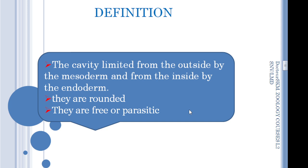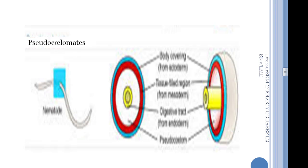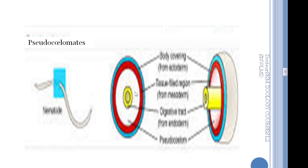These animals can be found in free life or parasitic life. If we cut a pseudocelomate animal, we discover the external layer which is the ectoderm — the body covering — and we find the internal covering of the digestive tract, which is endoderm. Between the ectoderm and the endoderm, we find a cavity. But this cavity is limited only on the external side by the mesoderm, so that's why we can't call it a celom.